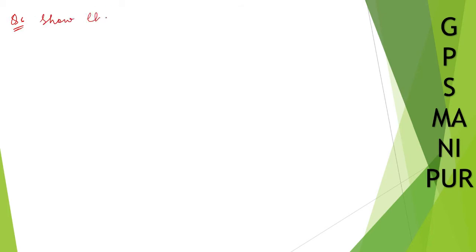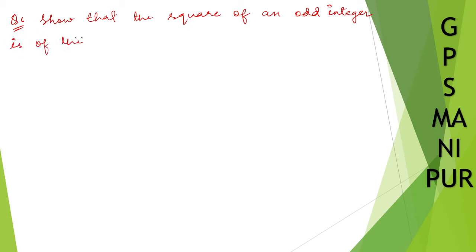Now we are doing question number 6. The question says: prove that the square of an odd integer is of the form 8k plus 1. Solution.